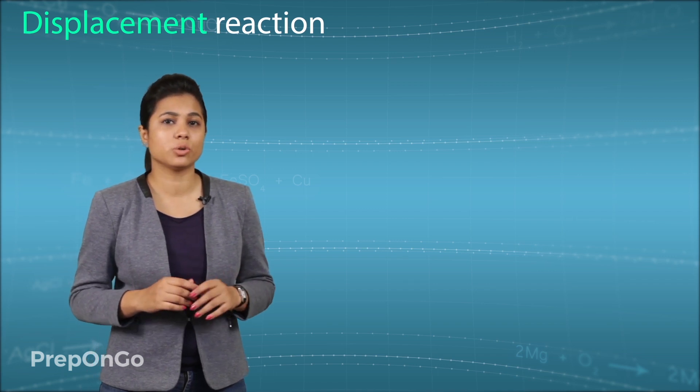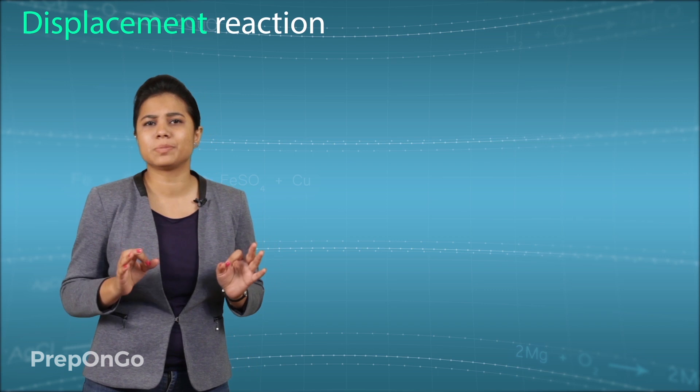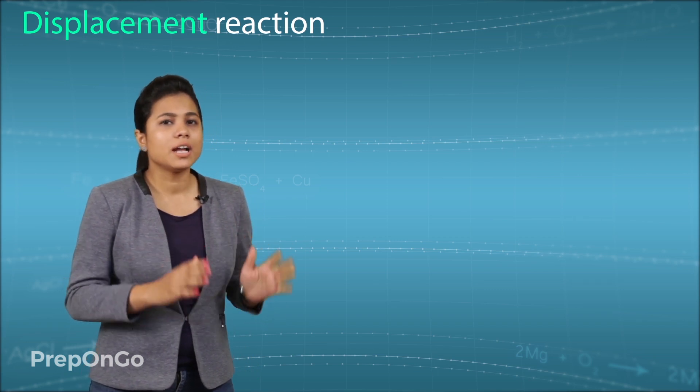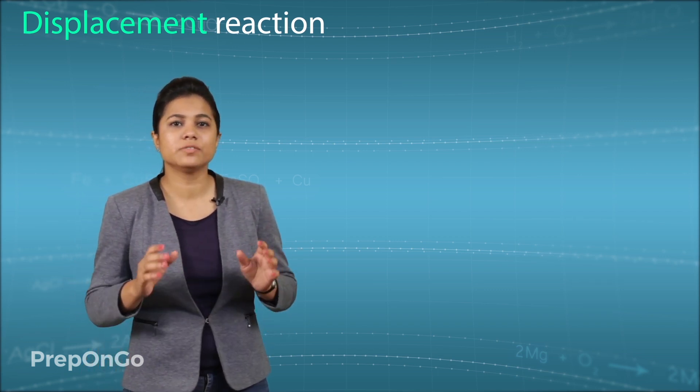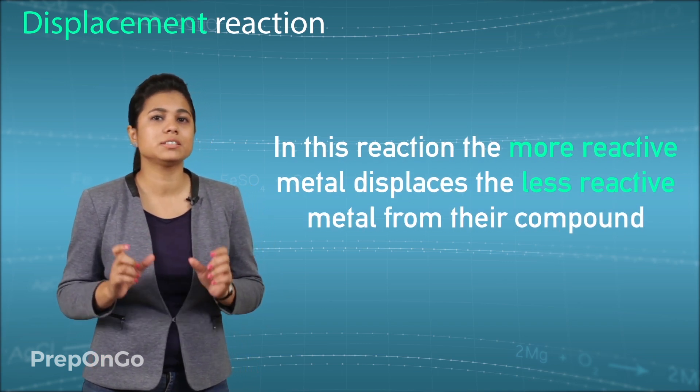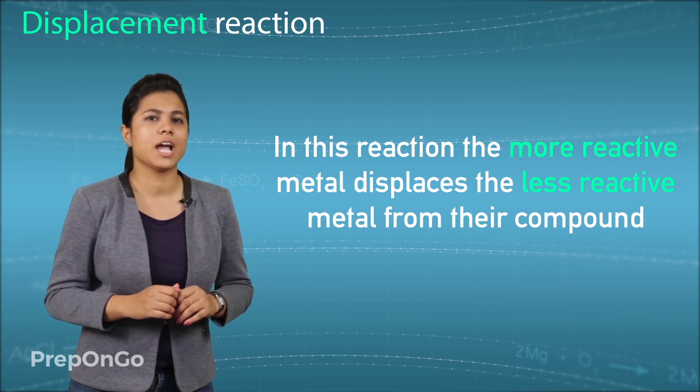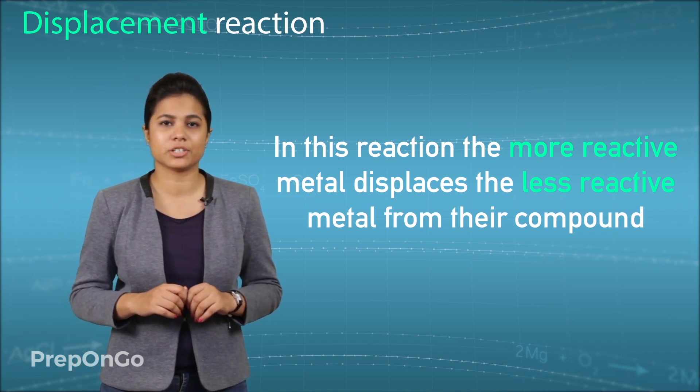Now even metals like to show their power and suppress the weaker metals, and this is what displacement reaction is. There are some metals which are highly reactive than other metals. So these reactive metals displace the less reactive metals from their compounds, and this type of reaction is called a displacement reaction.